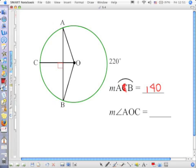Then the next question is, what is the measure of angle AOC? 140 divided by 2, which is 70?